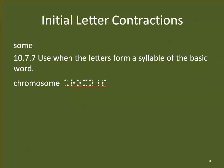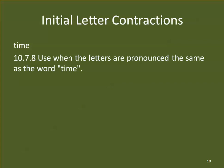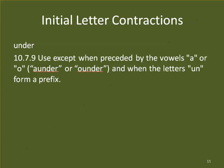S-O-M-E: used when the letters form a syllable of the basic word, so we will see it used in 'chromosome' — again, it's the contraction for the letters S-O-M-E, not the word 'some.' T-I-M-E: used when the letters are pronounced the same as the word 'time' — simple enough. U-N-D-E-R: used except when preceded by the vowels A or O, like 'laundry' or 'flounder,' and when the letters U-N form a prefix — such as 'underived,' where we would only use the contraction for E-R.